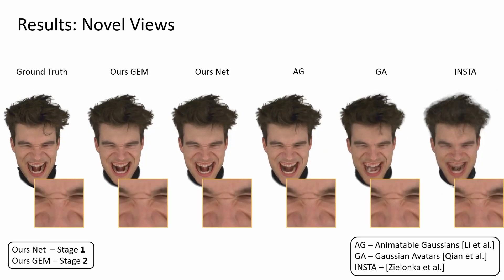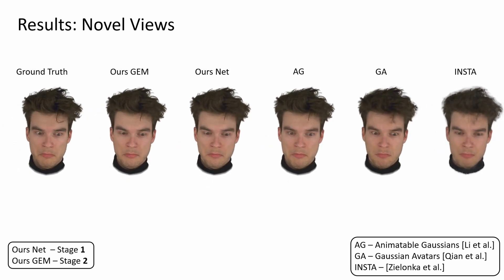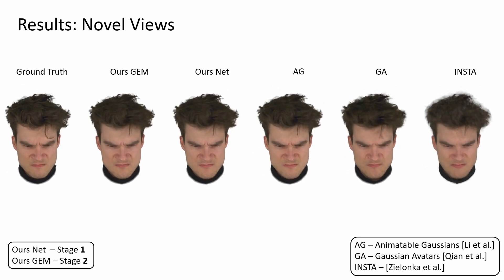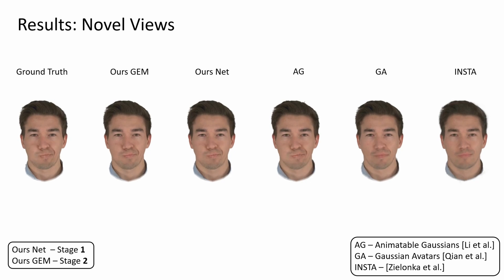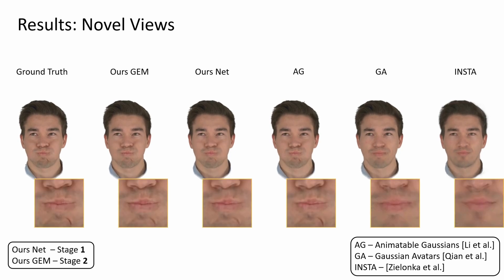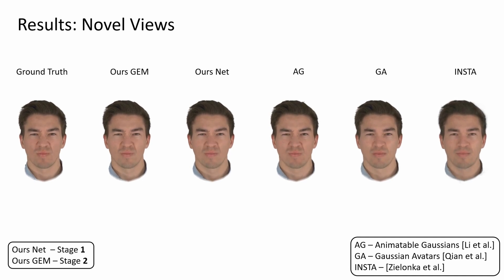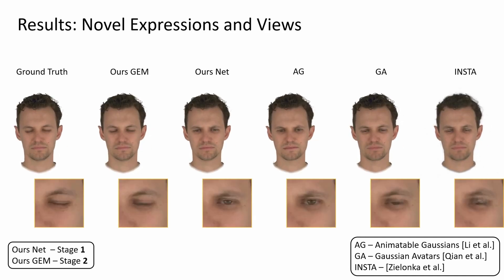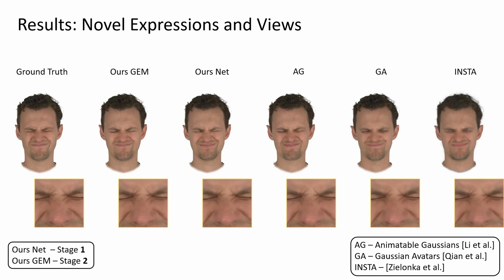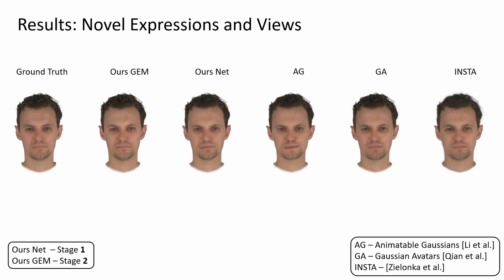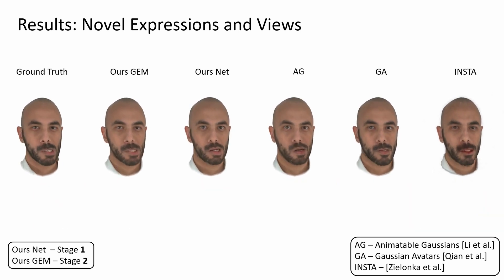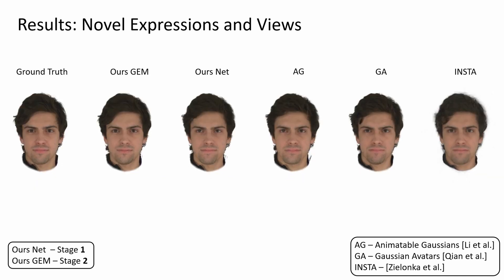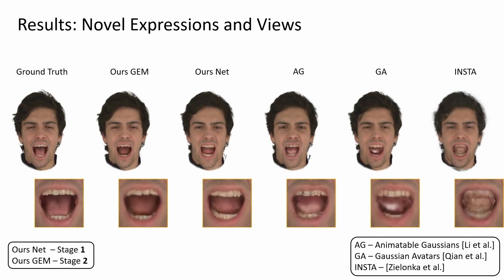Especially for expressions involving wrinkles, methods like Gaussian Avatars and Insta often fail to capture them adequately, resulting in over-smoothed regions. In our evaluation, we also conducted a novel view and expression test. Our method outperforms in capturing facial features, showcasing robust generalization and even extending to extrapolation to novel poses. Gaussian Avatars and Insta also struggle with mouth interior modeling.